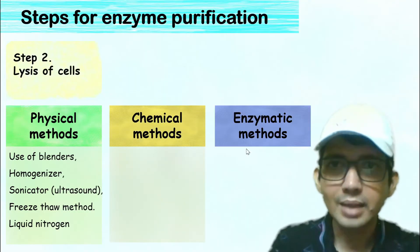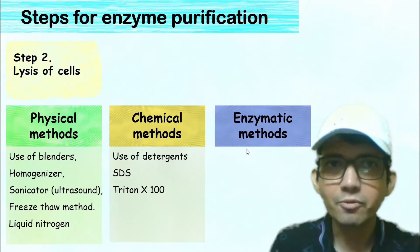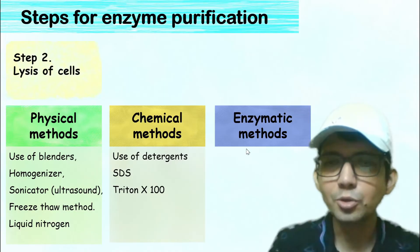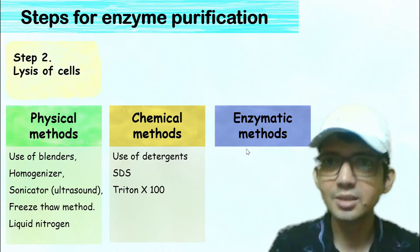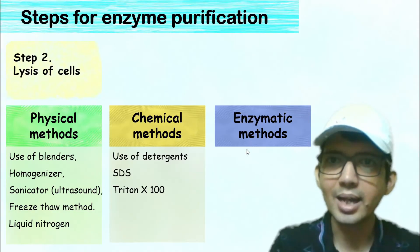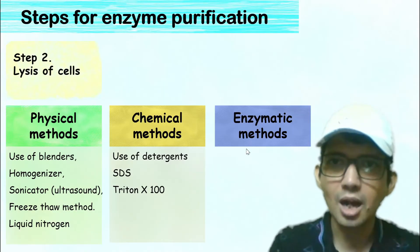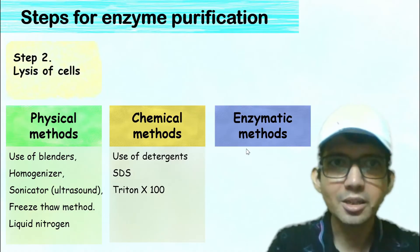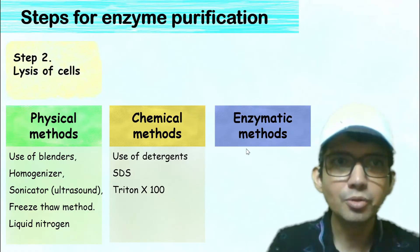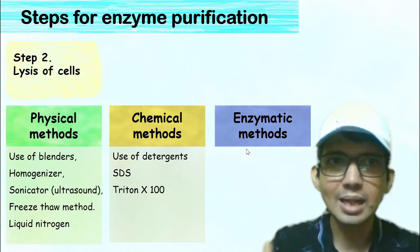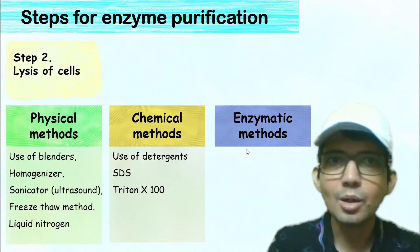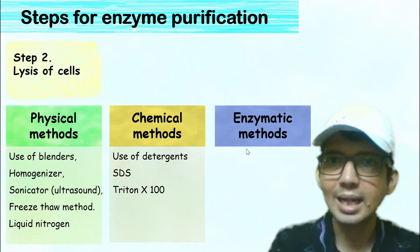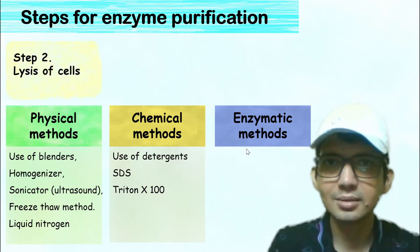The chemical method involves the use of detergents like SDS and Triton X-100. These detergents usually remove the cell membrane, which ultimately causes cell lysis.